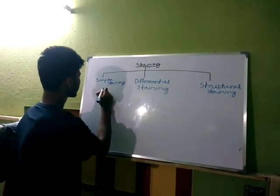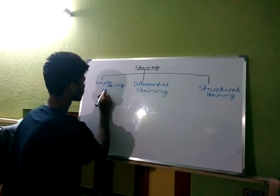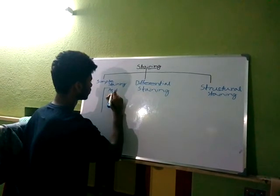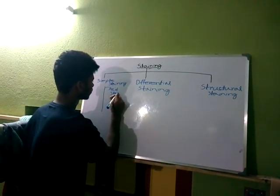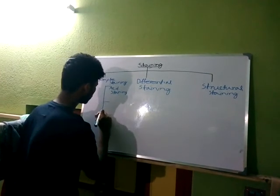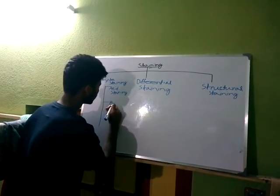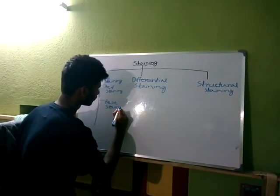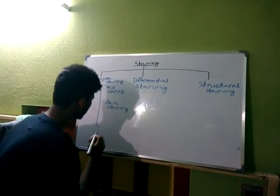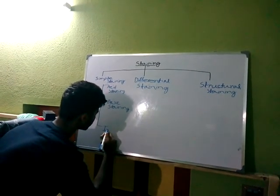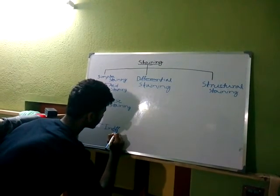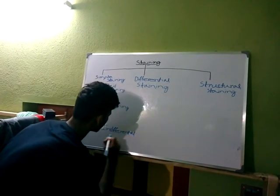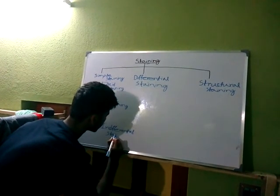Simple staining are three types: one, acid staining; two, basic staining; and three, differential staining.